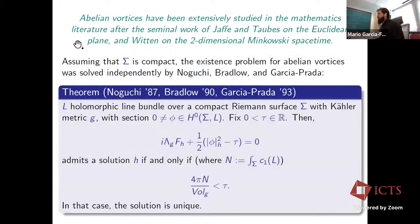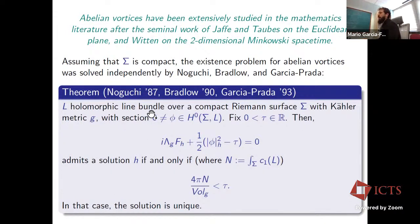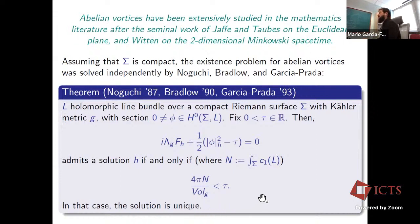Abelian vortices have been studied extensively in the literature, starting with Jaffe and Taubes on the Euclidean plane. Assuming sigma is compact, the existence problem was completely solved — independently by Noguchi, Bradlow, and Garcia-Prada. The basic result states: let L be a holomorphic line bundle over a compact Riemann surface with background Kähler metric g. There exists a solution h if and only if four pi times the vortex number N divided by the volume is smaller than tau. If a solution exists, it is unique.